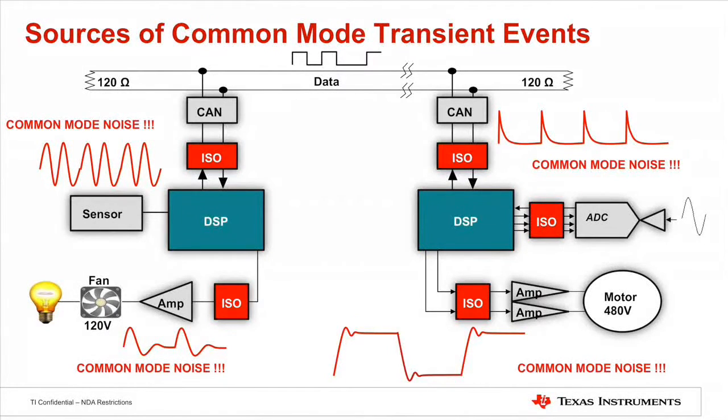They can arise from a number of sources, such as motor drives and fast switching nodes. CMTI measures the maximum common mode transient that can be tolerated while maintaining data integrity. It is commonly measured in kV per microsecond.